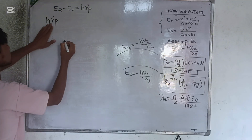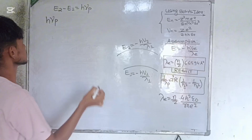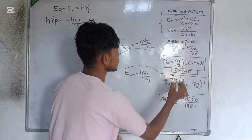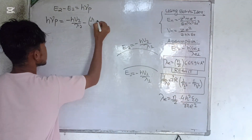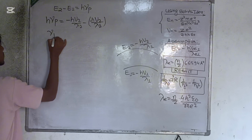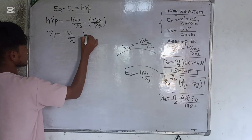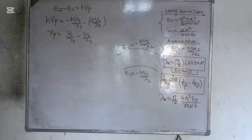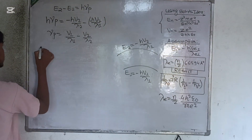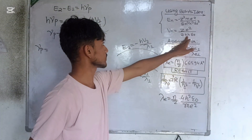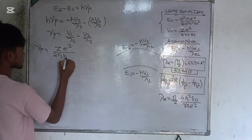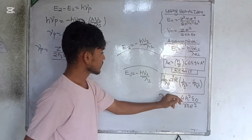Using ν for photon frequency and f for electron frequency: hν_photon = E₁ − E₂ = (−hv₁/λ₁) − (−hv₂/λ₂), giving ν_photon = v₁/λ₁ − v₂/λ₂ after Planck's constant cancels. For v₁, I substitute the Bohr velocity for the n₁ orbit: v₁ = Ze²/(2n₁hε₀), and for λ₁ I substitute: λ₁ = (n₁/Z) × 4h²ε₀/(me²).